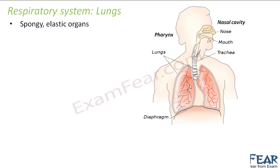As you can see, these are the two lungs we have in our body. They are spongy and elastic — elastic means they can increase or decrease in size, giving them flexibility. They are located in the thoracic cavity, and the lower surface of the lungs rests on the diaphragm, which marks the end of the thoracic cavity.